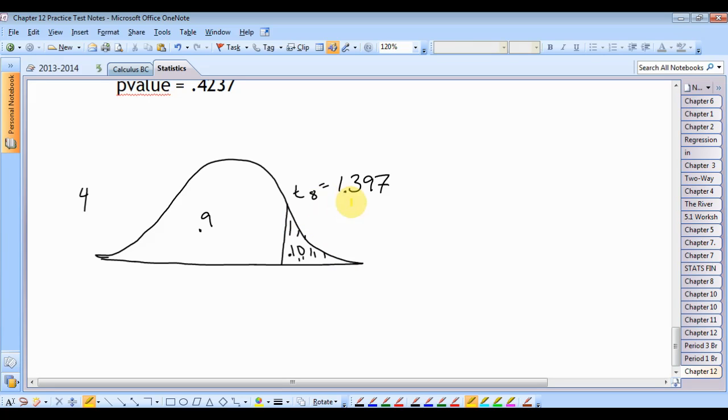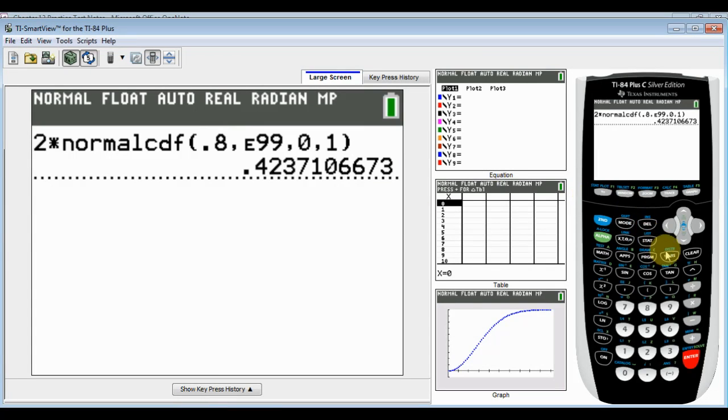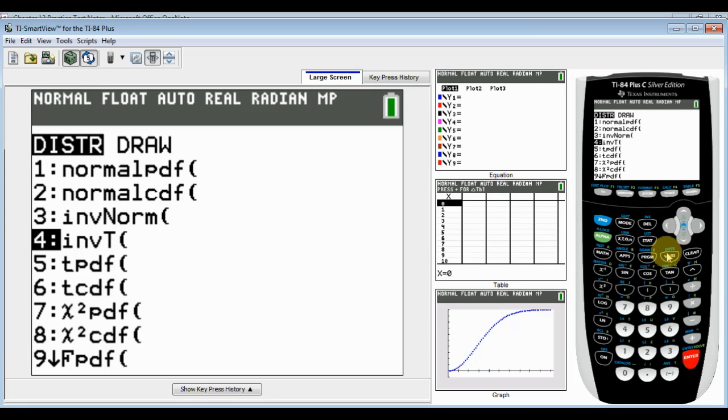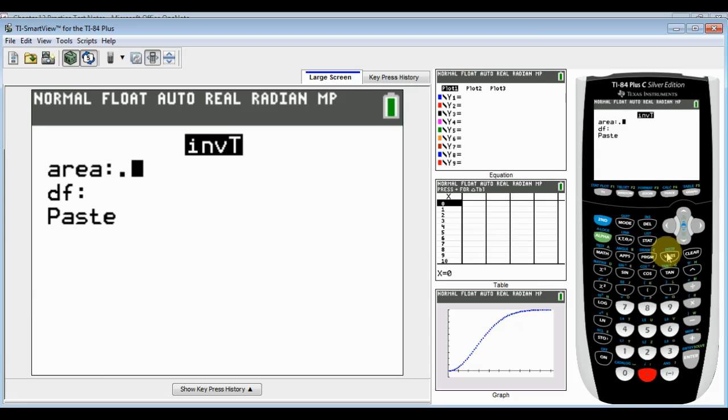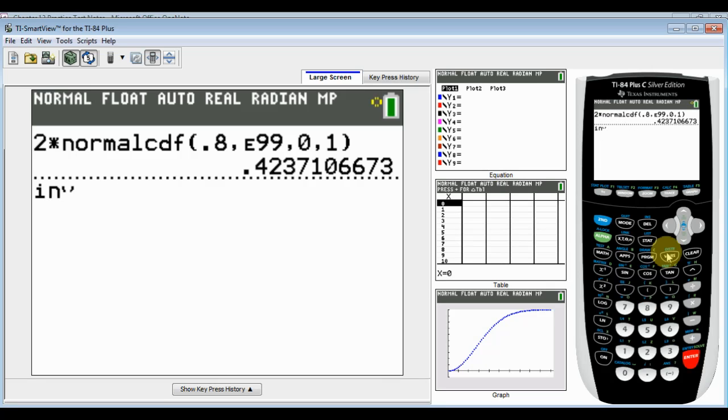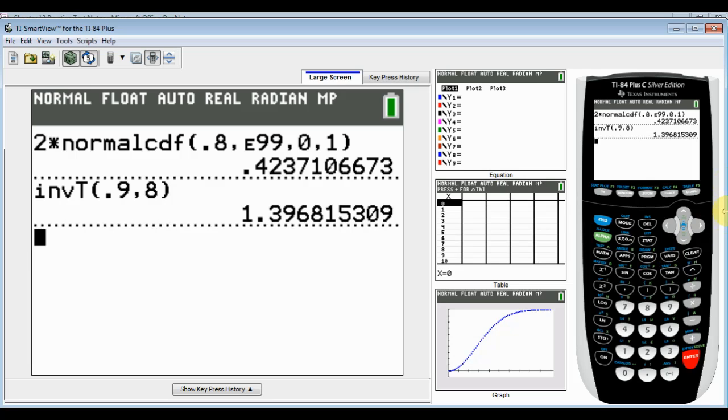So how do we get this 1.397? Remember that the area to the left is 0.9. And so to get a T-score, you need an inverse T. So we're looking for inverse T. The area on the left is 0.9. There are eight degrees of freedom. And that gives me the 1.397.